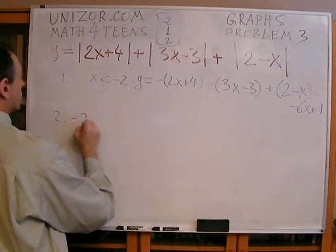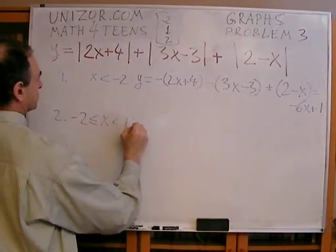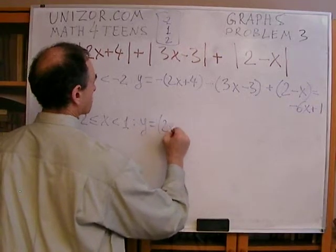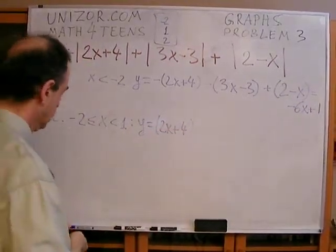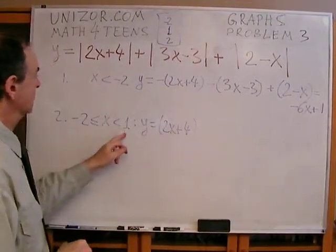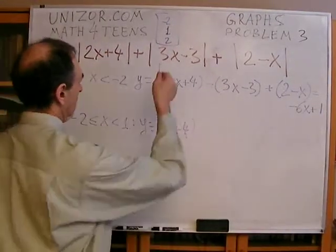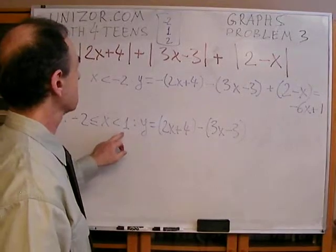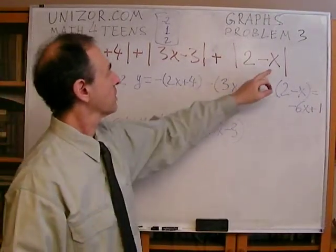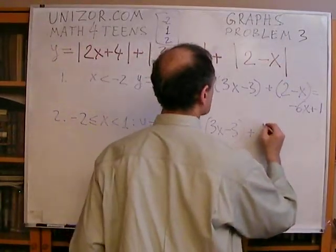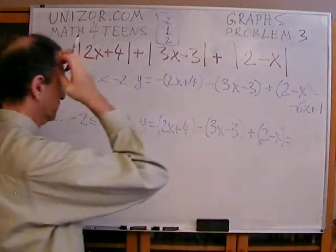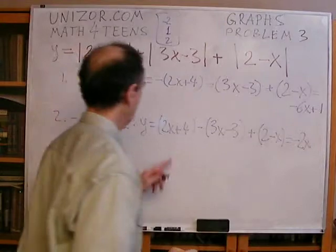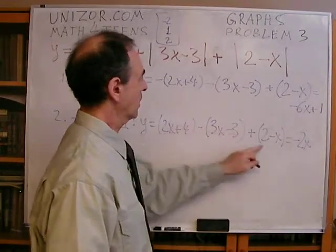Case number two, from minus two to one. This becomes positive, so y is equal to two x plus four, that's positive. This, since x is still less than one, is negative, so actual value I have to reverse the sign, three x minus three. Now if x is less than one, this is positive as it is, so it remains. Equals to two x minus three x minus one x, and minus x is minus two x. Plus four, plus three is seven, plus two, nine.